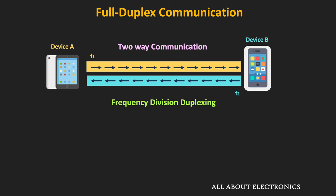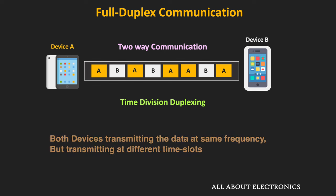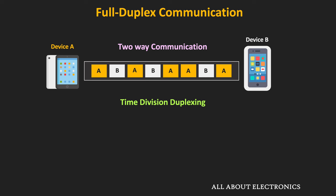The second approach is known as time division duplexing. Here, both devices transmit data on the same frequency but at different time slots. A single channel is divided into time slots, and both devices transmit at different time slots. Since these time slots are very short, it feels as if transmission in both directions is happening almost simultaneously, which is why this is still considered full-duplex communication. The slots in yellow represent when device A is transmitting, and the slots in white represent when device B is transmitting.